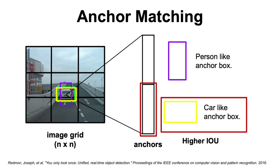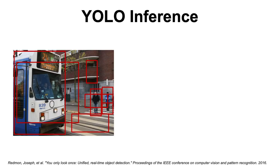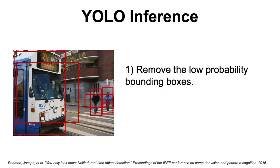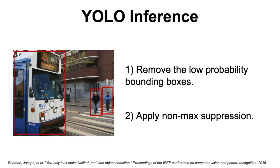Another aspect of the YOLO architecture I would like to discuss is what happens during inference. We take an image, run the model on that image, and obtain multiple predictions in each cell — one for each anchor employed. We then remove the predictions that have a low probability, and on what's left we apply the non-maximum suppression algorithm to remove bounding boxes that have a high intersection over union with the bounding boxes that have the highest probabilities.